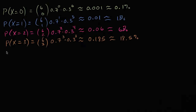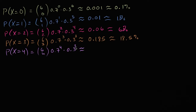The probability that our random variable is equal to four is going to be six choose four, times 0.7 to the fourth power, times 0.3 to the second power, which is approximately 0.324 — so roughly a 32.4% chance of making exactly four out of the six free throws.